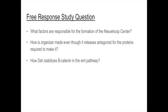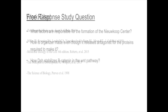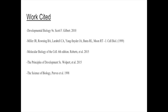A few review study questions that were answered throughout the presentation: What factors are responsible for the formation of the Nieuwkoop Center? How is the organizer made even though it releases antagonists for the proteins required to make it? And how does disheveled stabilize beta-catenin in the Wnt pathway? Thank you for watching.